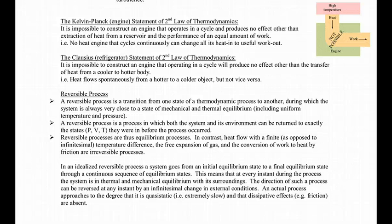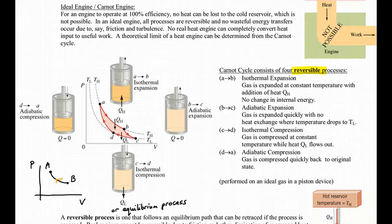But let's go back to the Carnot cycle. The Carnot cycle contains four of these reversible processes: two isothermal expansion and compression, and two adiabatic compression and expansion as well. The cycle operates between two temperatures, TH and T cold, or TL for T low.